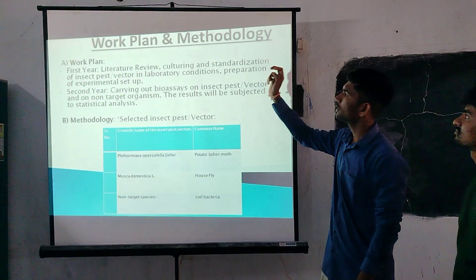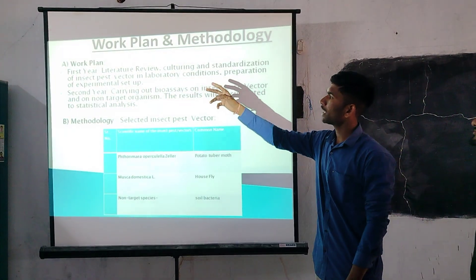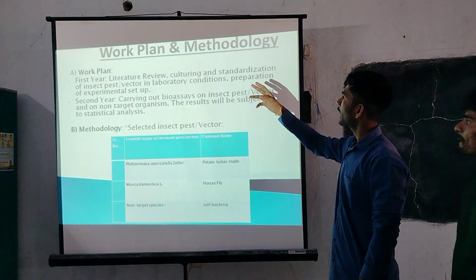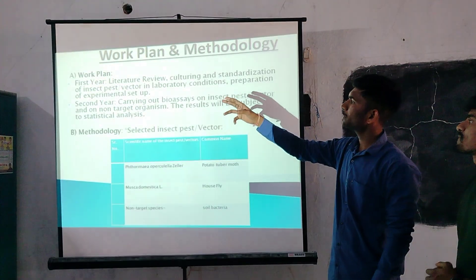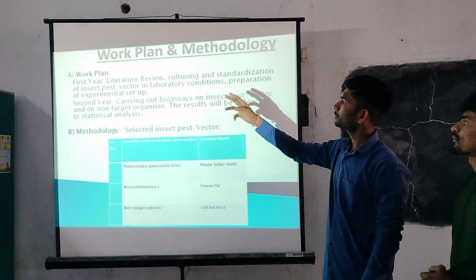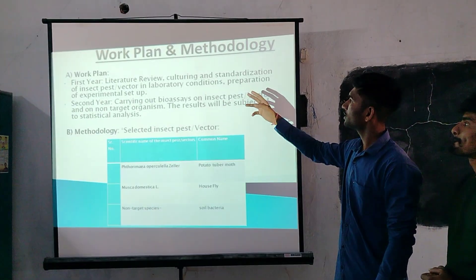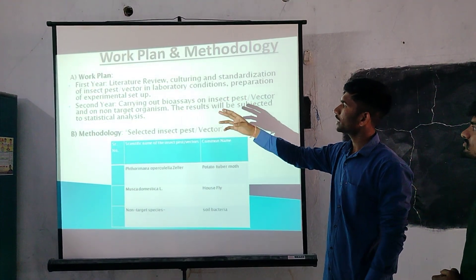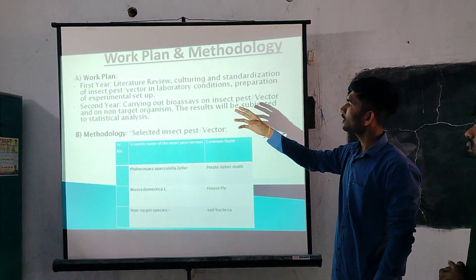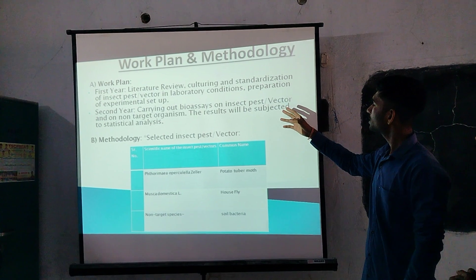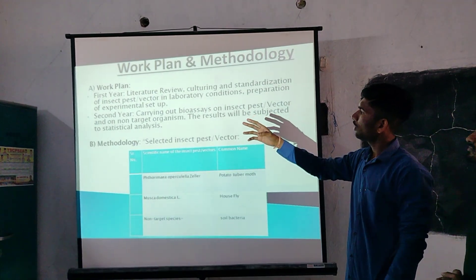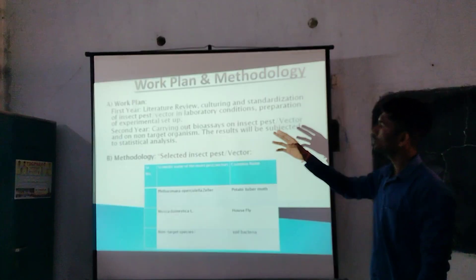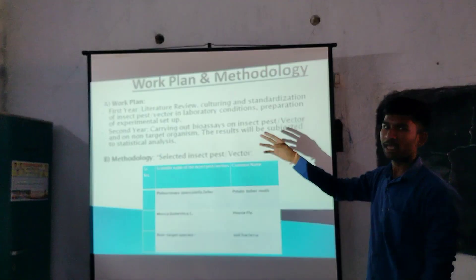D. Work plan and methodology. A. Work plan. First year: literature review, culturing and standardization of insect pests or vectors in laboratory conditions, and preparation of experimental setups. Second year: carrying out bioassays on insect pests or vectors and on non-target organisms. The results will be subjected to statistical analysis.